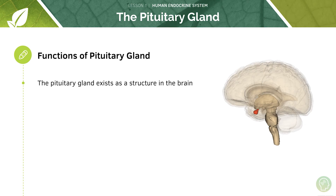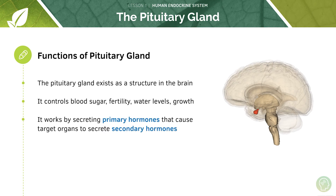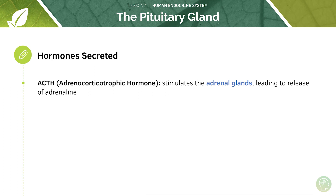Now let's look at the functions of the pituitary gland. The pituitary gland exists as a structure in the brain and it controls blood sugar, fertility, water levels and growth. It does this by secreting primary hormones that cause target organs to then secrete secondary hormones. The hormones secreted by the pituitary gland include ACTH — adrenocorticotropic hormone — which stimulates the adrenal glands, leading to release of adrenaline. Adrenaline is for example released during exercise and causes an increase in heart rate.